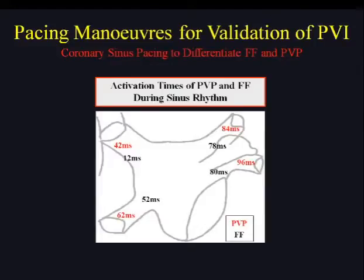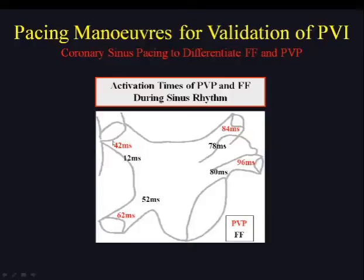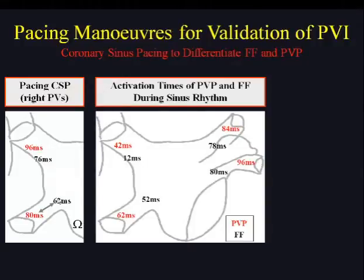The first differential pacing mode uses only your coronary sinus catheter — no extra catheter is needed transeptally. Looking at the activation times of potentials on the PVAC trace during sinus rhythm: the far-field activation and PV potential activation times are almost overlapping for most veins. Only for the right superior pulmonary vein is there already a differentiation. For the right inferior pulmonary vein, pacing the proximal coronary sinus easily differentiates the far-field potential from the PV potential — a maneuver used consistently for that vein.